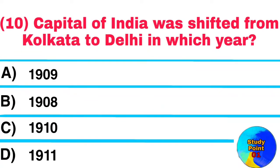Question No. 10. Capital of India was shifted from Kolkata to Delhi in which year? Answer: 1911.